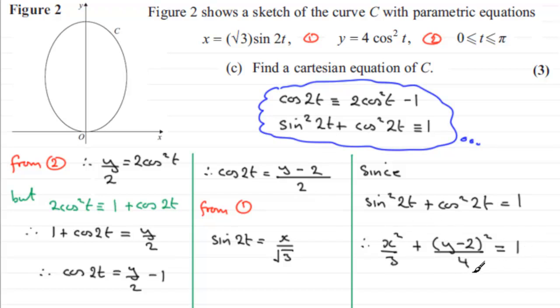So there essentially is the Cartesian equation of C. You could rearrange this if you wanted to give anything that's equivalent to this, but essentially that is it, and that is one way that you can get the Cartesian equation. All right, so I hope that makes some sense.